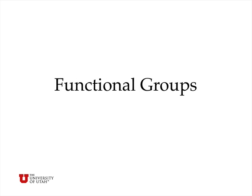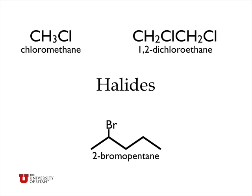In addition to hydrocarbons, we have functional groups — lots of different kinds that can be attached to hydrocarbons to give them special reactive properties. For example, halides can be formed by substituting one or more hydrogen atoms with a halogen atom: fluorine, chlorine, bromine, iodine, and so forth. So we have chloromethane, 1,2-dichloroethane where two hydrogen atoms are replaced with chlorine atoms, and 2-bromopentane, which has a chain of five carbon atoms with a bromine atom replacing one hydrogen on carbon number two. This is the stick notation for halide functional groups.